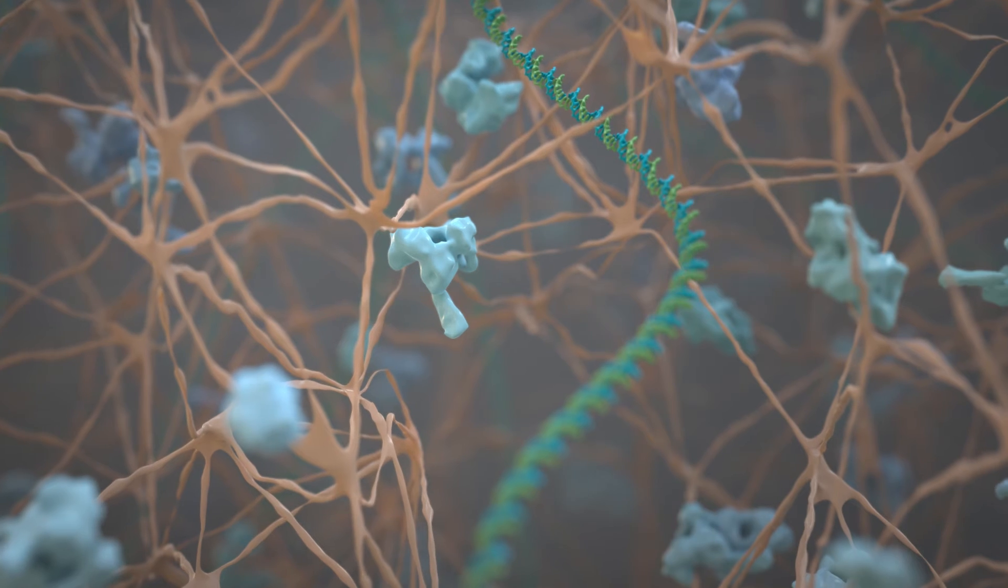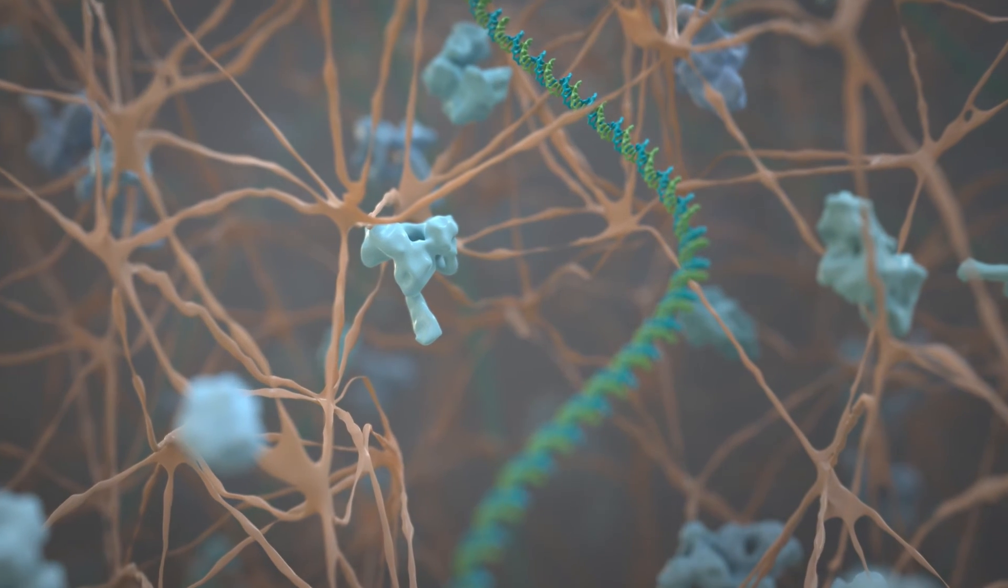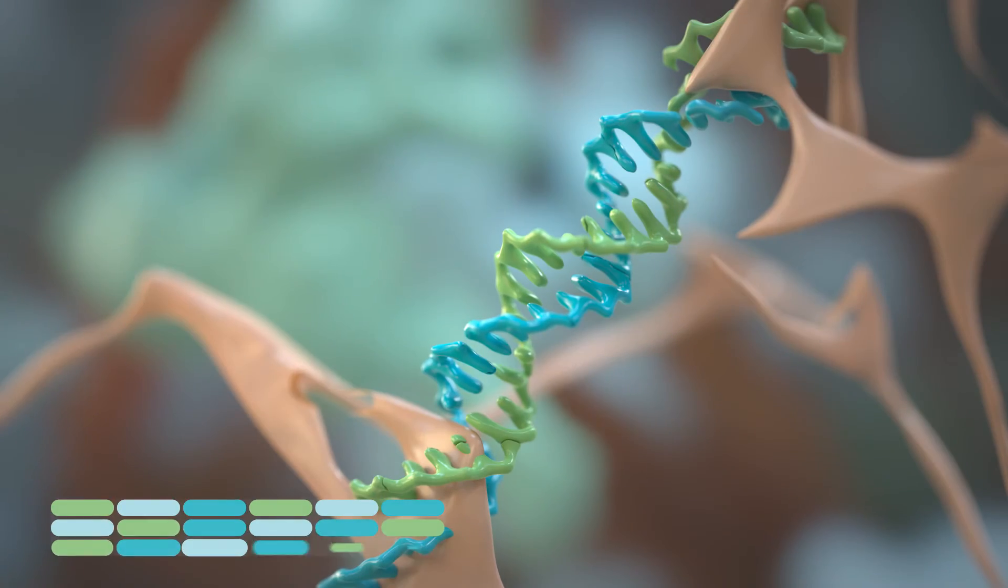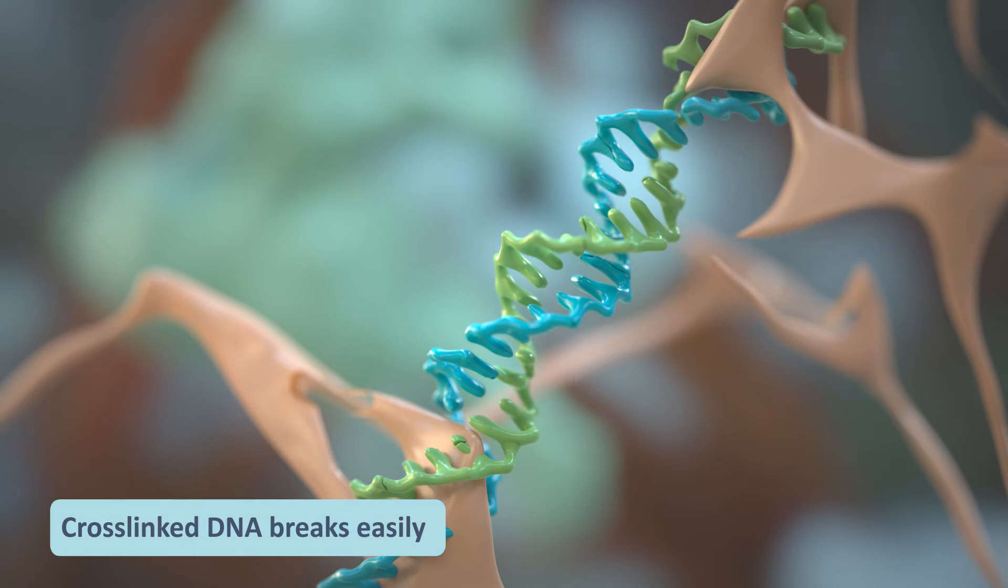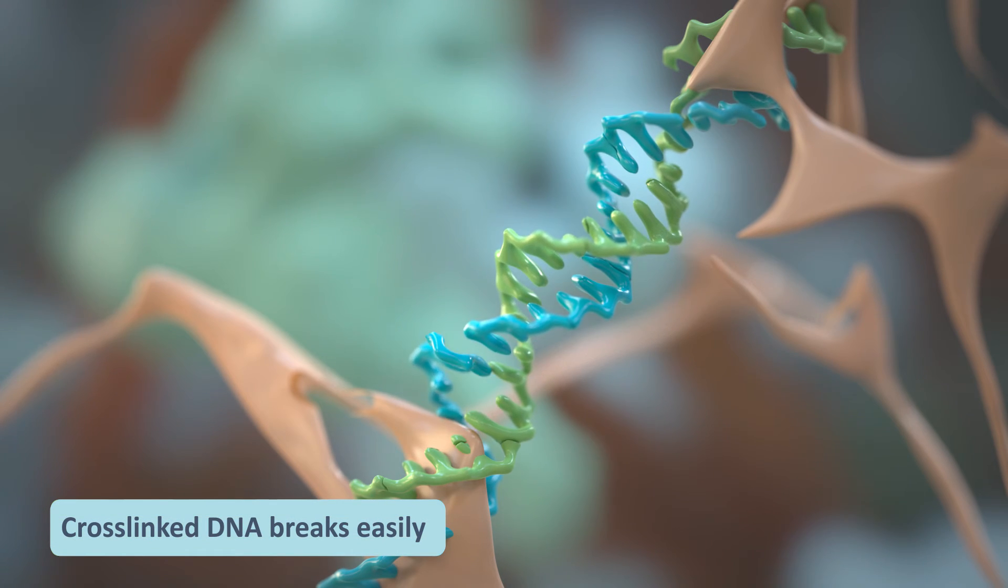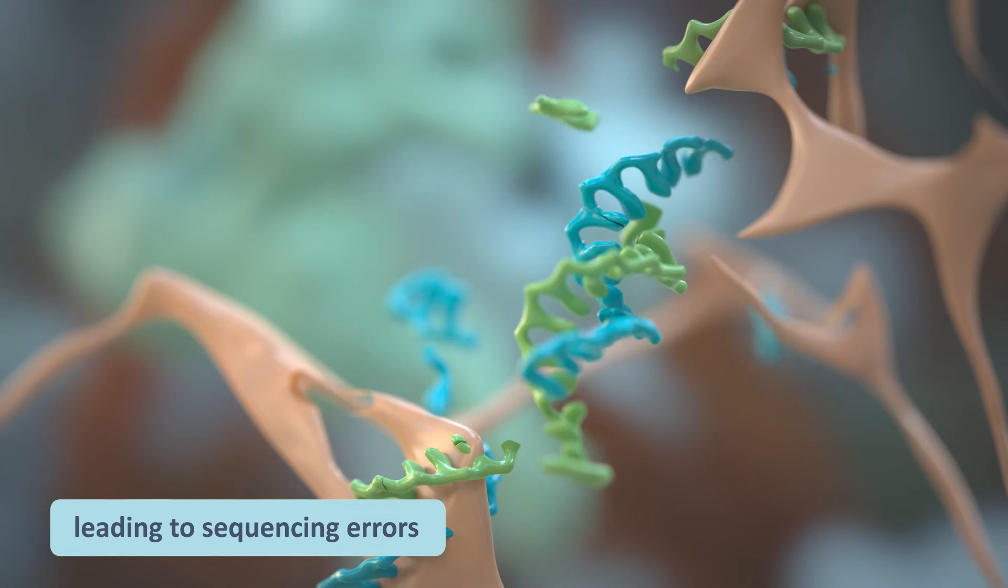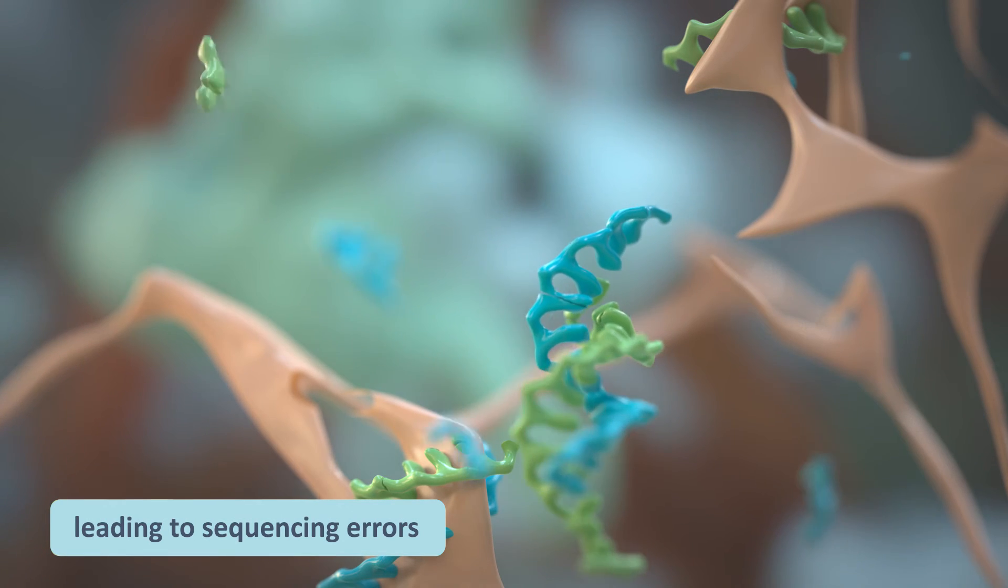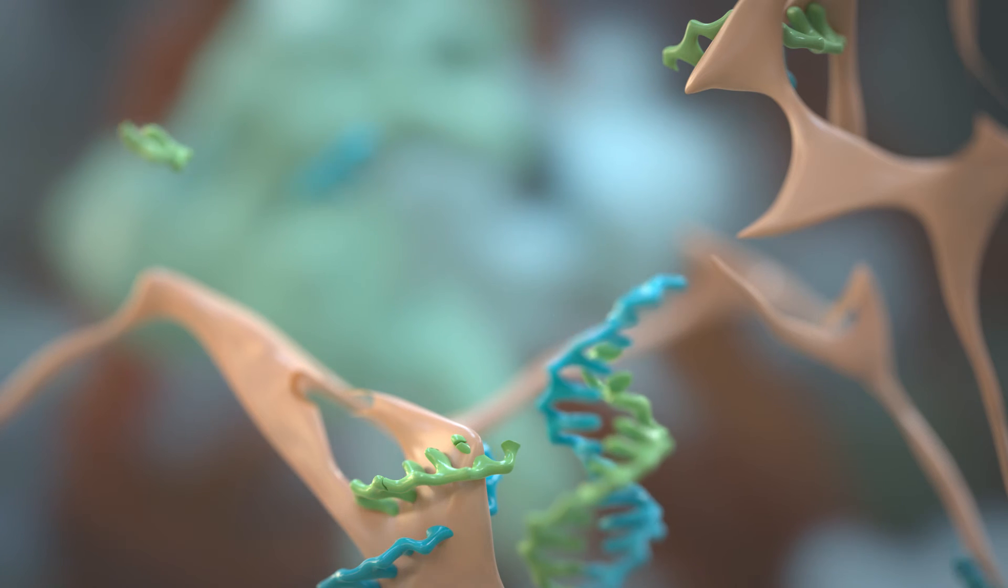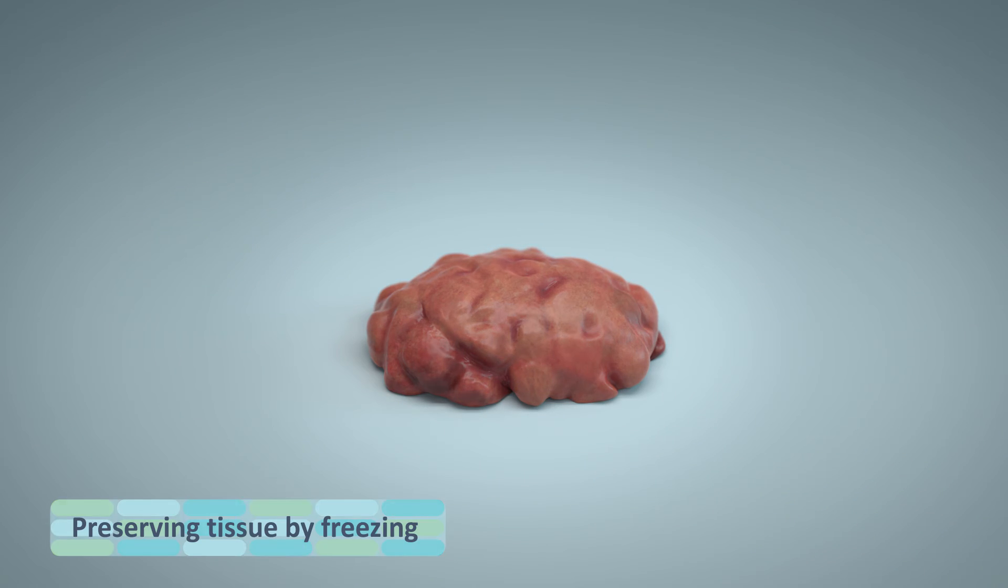This is ideal for cutting thin slices for microscopy, but cross-linking DNA and proteins together makes it difficult to isolate DNA strands for sequencing. Extracting cross-linked DNA can break and damage the DNA strands, which leads to inaccuracies and errors in DNA sequencing. But there are other ways of preserving tissue biopsies that are kinder to the DNA.